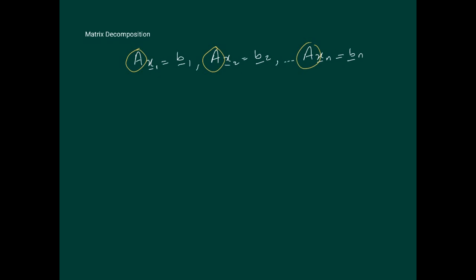Gaussian elimination requires an order of n cubed over three operations for reduction of the matrix and, of course, the back substitution. Matrix decomposition is an idea where we break the matrix A into a product of a lower triangular and an upper triangular matrix — a product of two matrices, one lower and one upper.